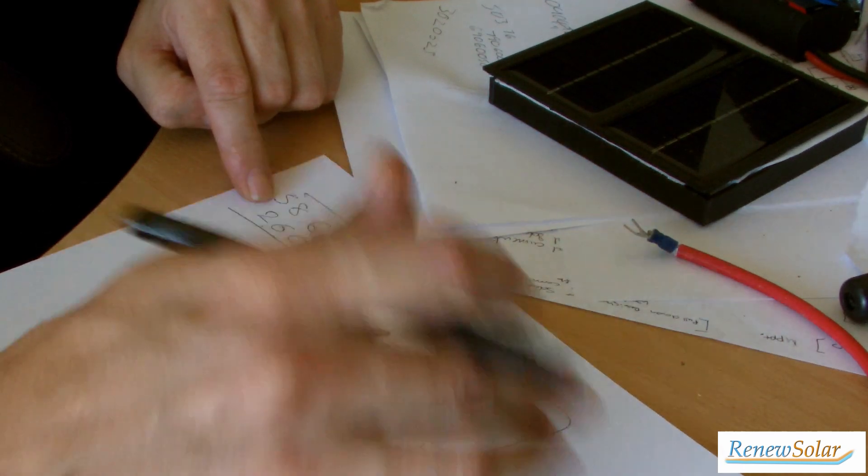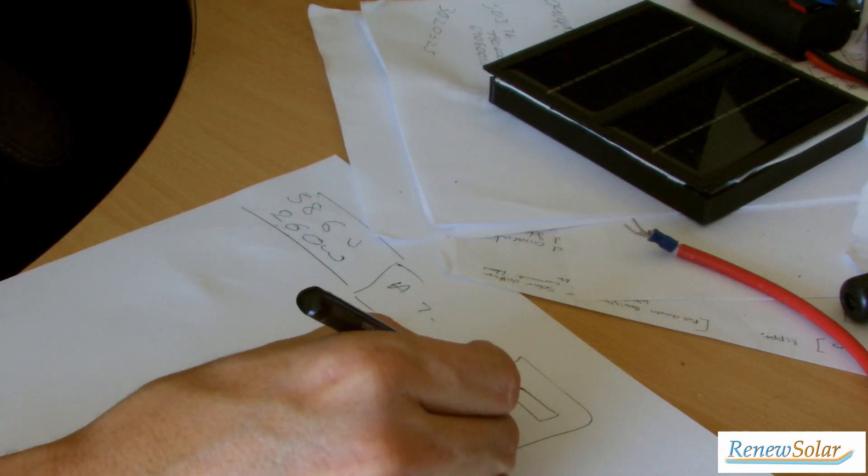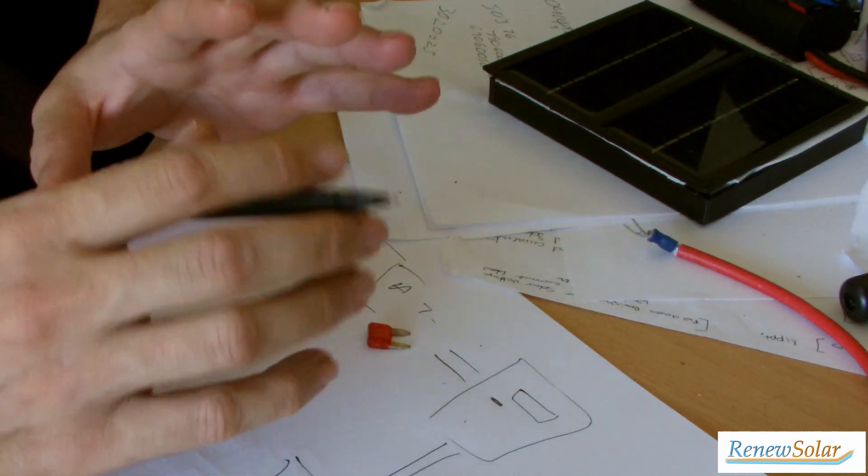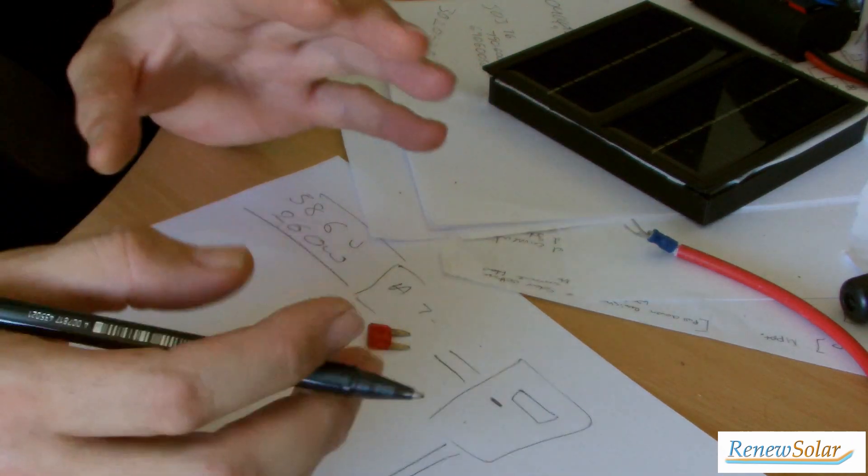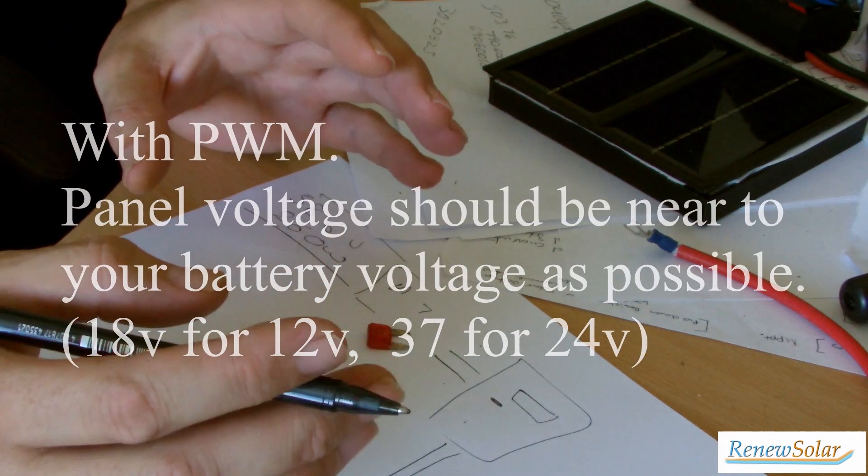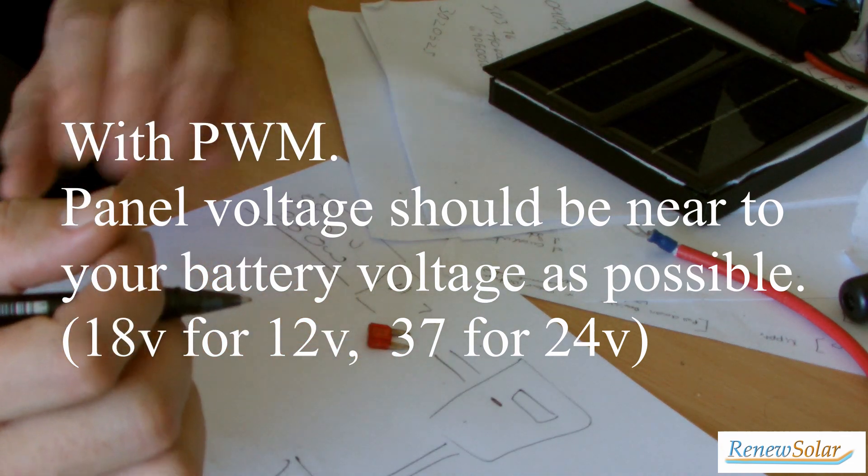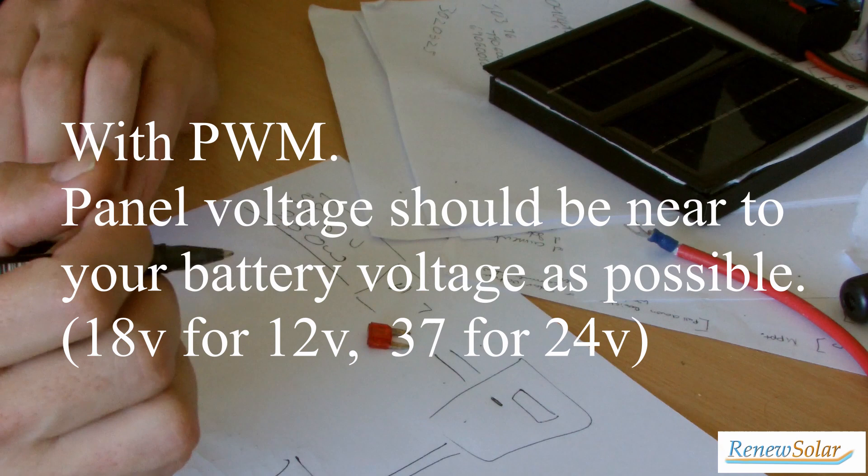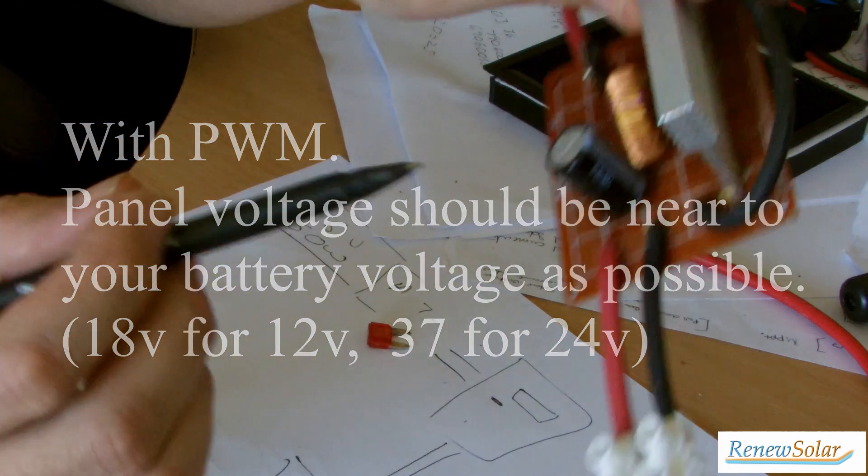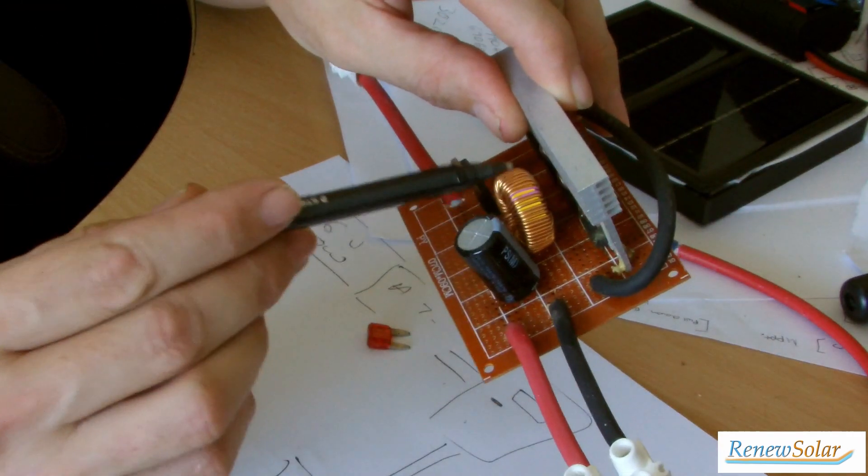This might have a display on it or other types of things. It might have a USB connector, it could have anything on it really. There's loads of different types, loads of different brands. So there's going to be PWM which is pulse width modulation or MPPT which is maximum power point tracking. Maximum power tracking ones will always have an inductor inside them.